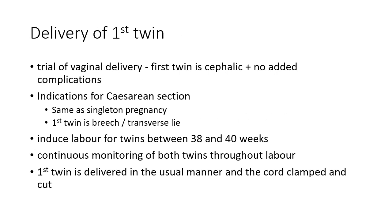Now let us see about the management of multiple pregnancy, starting with delivery of the first twin. A trial of vaginal delivery is done when the first twin is cephalic and there are no added complications. The indications for caesarean section in multiple pregnancy are the same as for singleton pregnancy, or when the first twin is in breech or transverse lie. It is advisable to induce labor for twins between 38 to 40 weeks of gestation. Continuous monitoring of both twins is essential throughout labor, and the first twin is delivered in the usual manner with the cord clamped and cut.